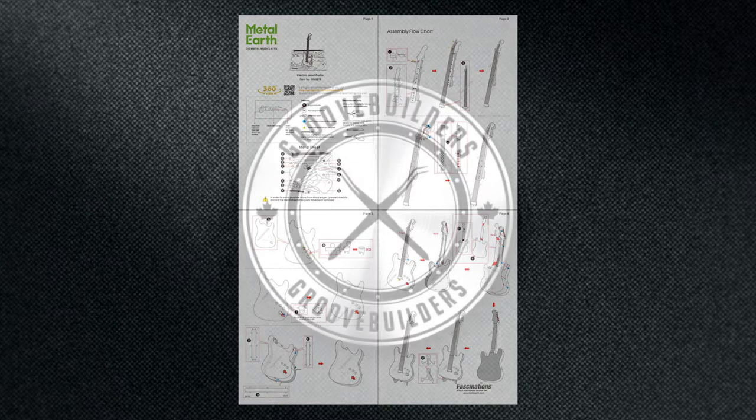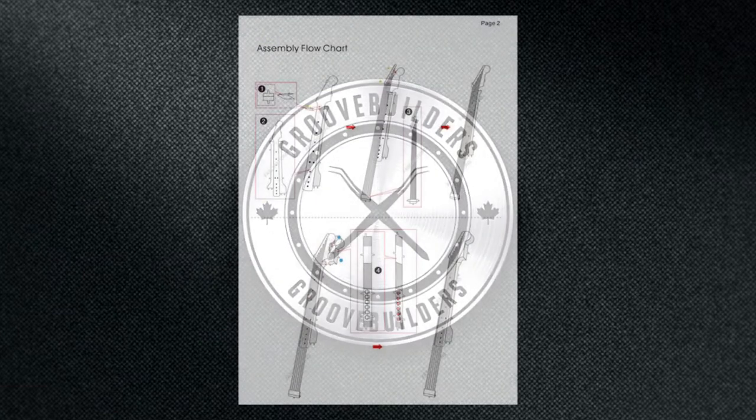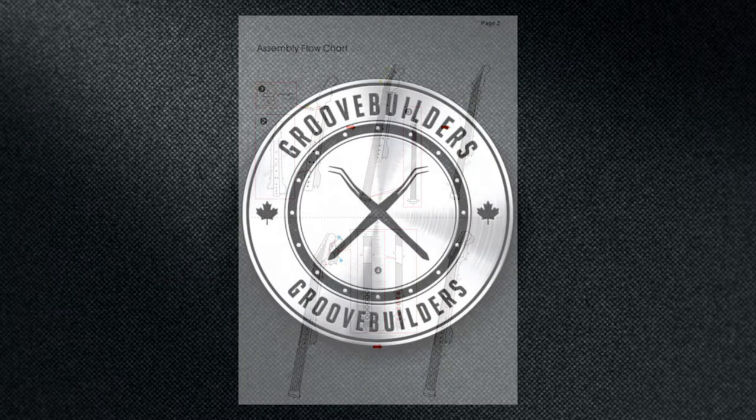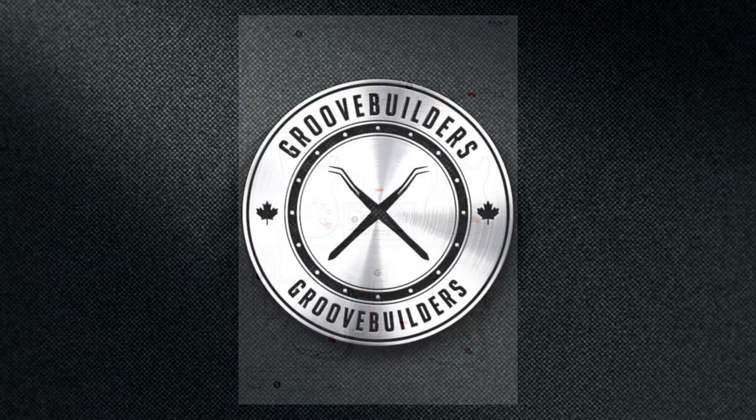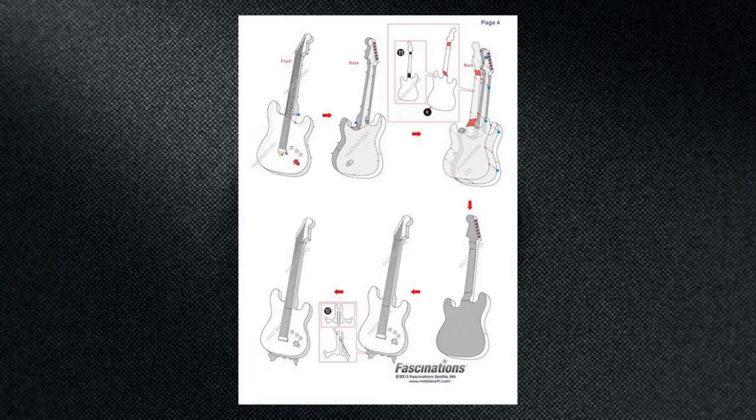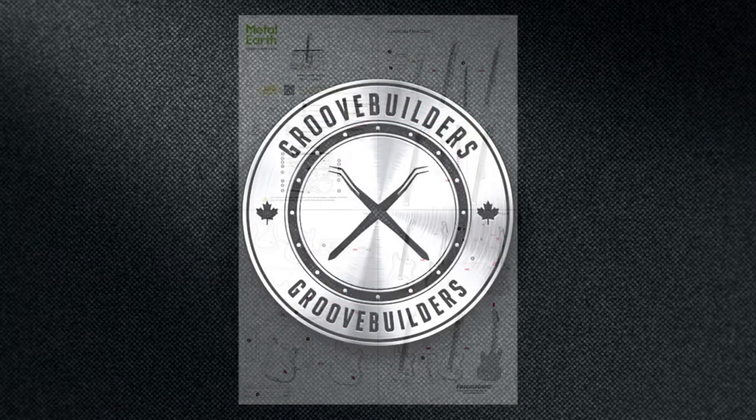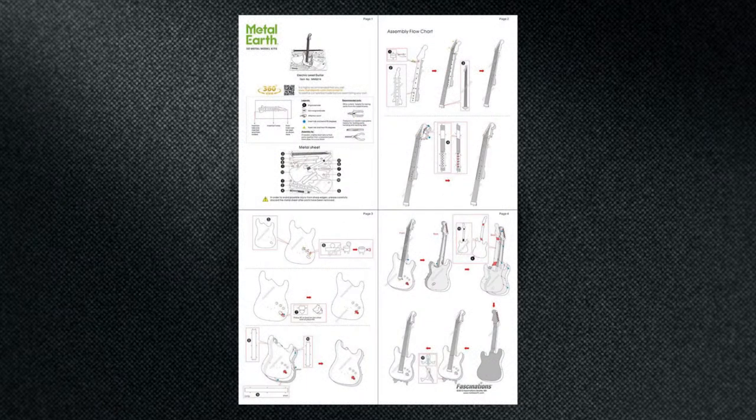We got some bending to do. The first thing we'll touch on is our neck detail. Next, we'll look at our body and how to get those sides just right. Finally, we'll talk about putting all of our assemblies together to make our awesome lead guitar.